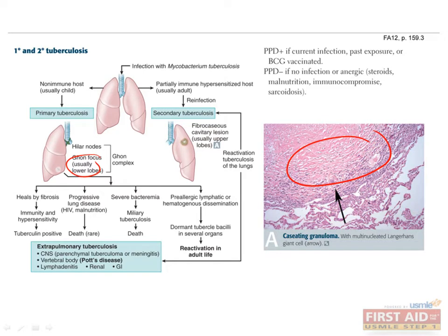Most of the time, infection is controlled in hosts with intact cell-mediated TH1 immunity and the host experiences no symptoms. However, TB bacteria are not always eliminated from the host — they can remain in a viable but dormant form within granulomas, ready to be reactivated at the first sign of immunodeficiency. Reactivation of dormant TB can lead to secondary TB, which commonly favors the apices of the lungs, as M. tuberculosis has a predilection for the high oxygen concentration found there.